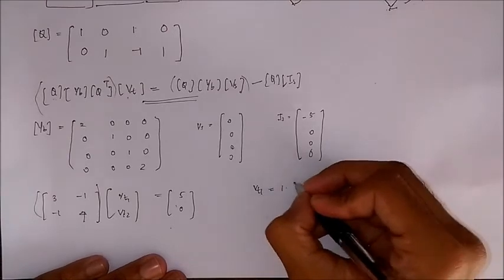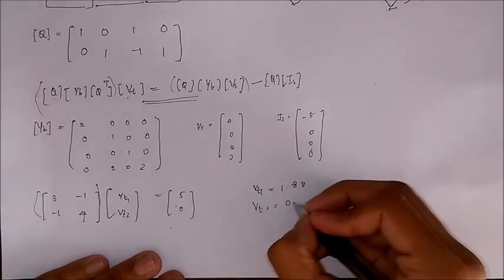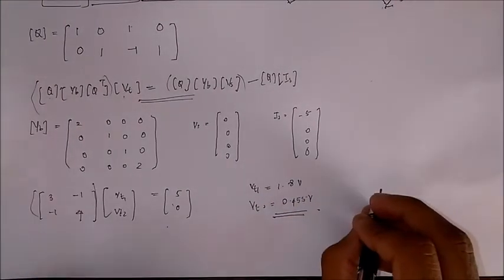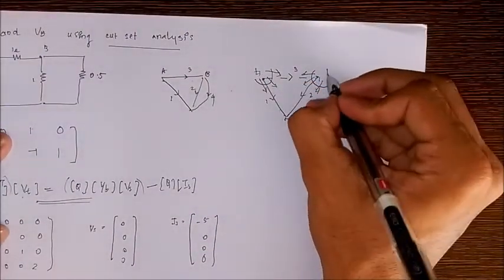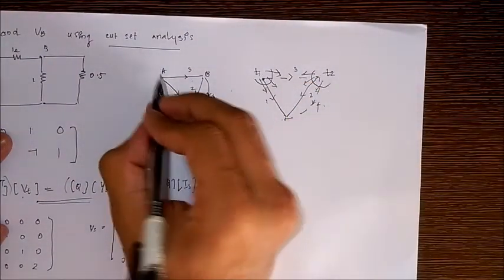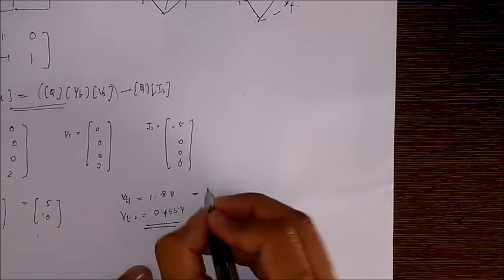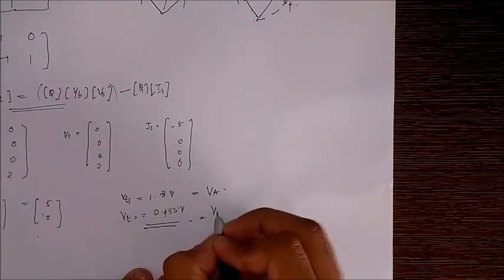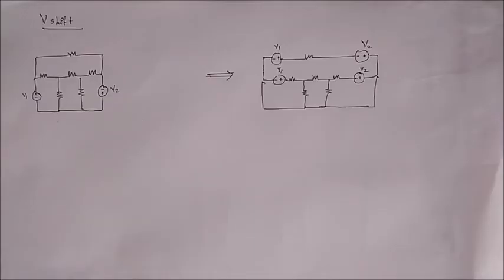So here as you can see Vt1, that is the first cut, and Vt2 are actually the node voltages Va and Vb. Therefore we directly get this as Va and this as Vb. Therefore this is the node analysis using cut set.